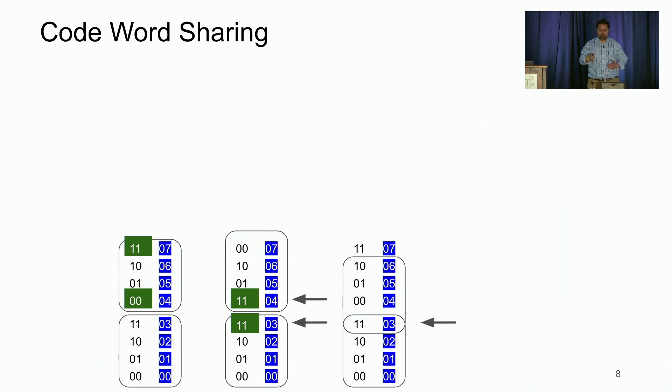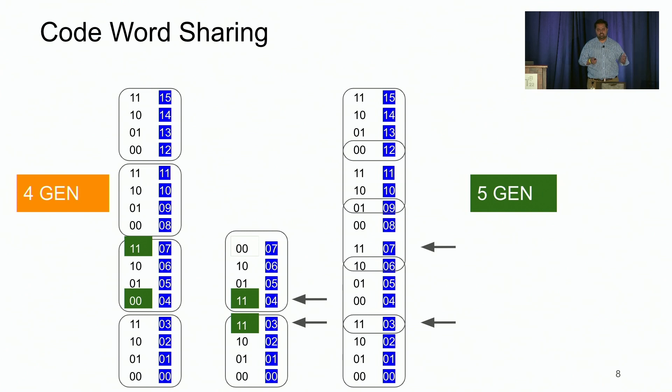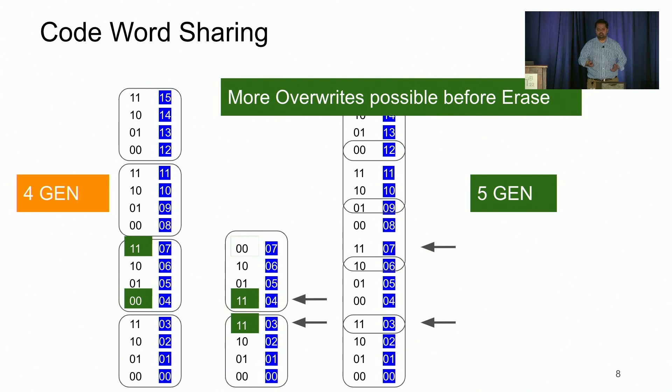What this helps us do is it frees up one voltage state at the top of generation two, which may seem like a very trivial optimization at first, but if we do this optimization across different generation boundaries, we realize that instead of writing four generations, we are now capable of writing five generations to the underlying QLC drive without performing an erase operation.